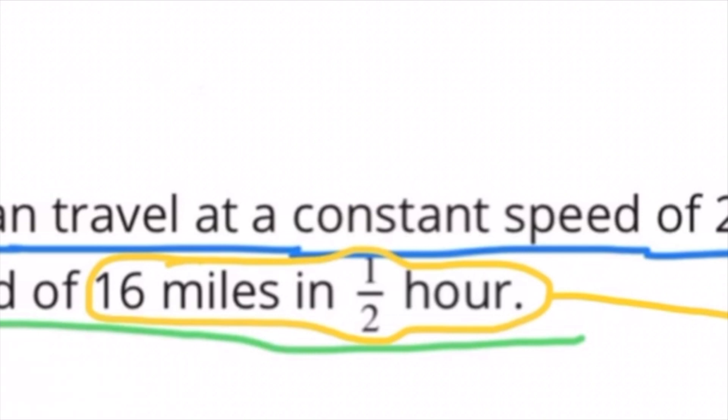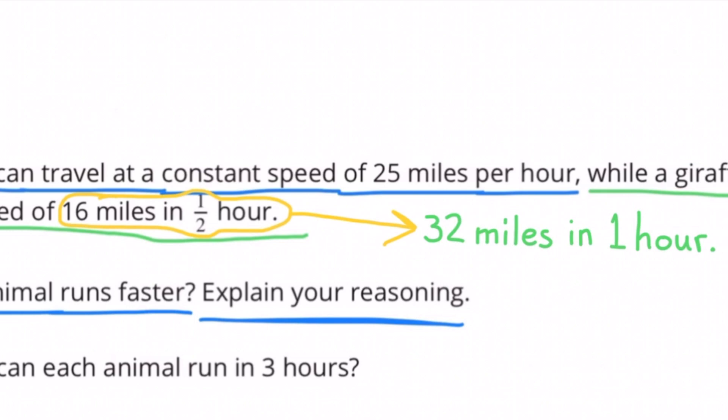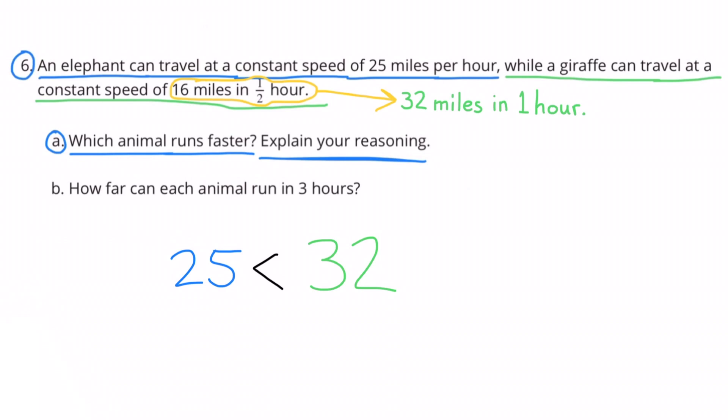First, take a look at the constant speed of the giraffe. It travels at sixteen miles in a half hour. So sixteen miles in a half hour is the same as thirty-two miles in one hour. And twenty-five miles is less than thirty-two miles. So the giraffe travels faster than the elephant.